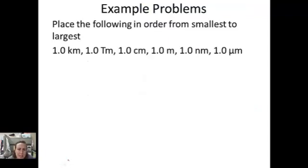What about this example? If we were to place these in order from smallest to largest. Look at these prefixes and tell me which one of these is the smallest. Okay, I see an example. Okay, remember that nano is 10 to the negative 9. So the smallest one would be 1 nanometer.